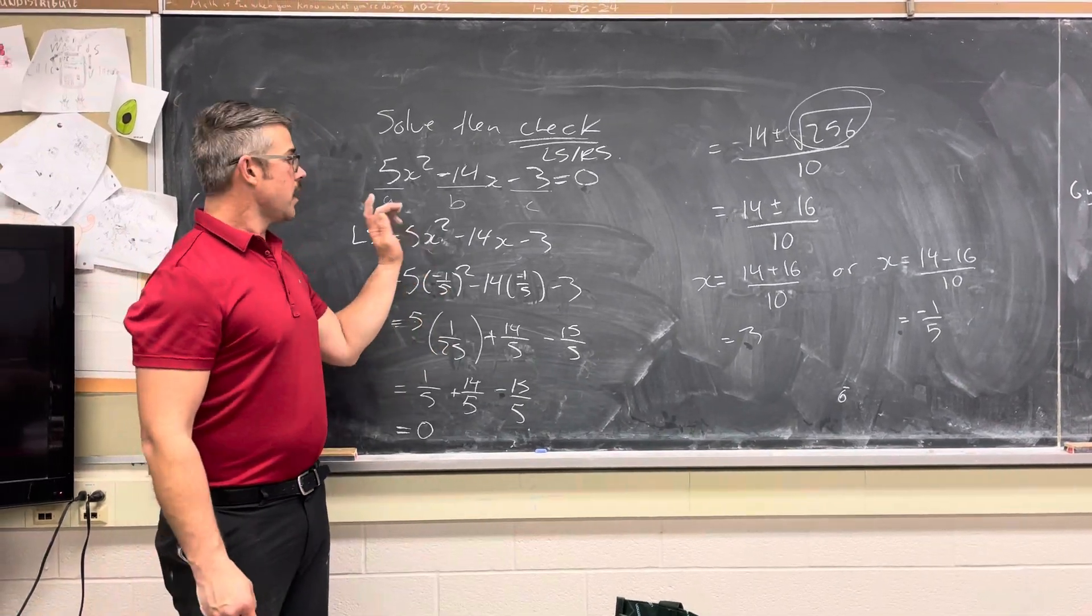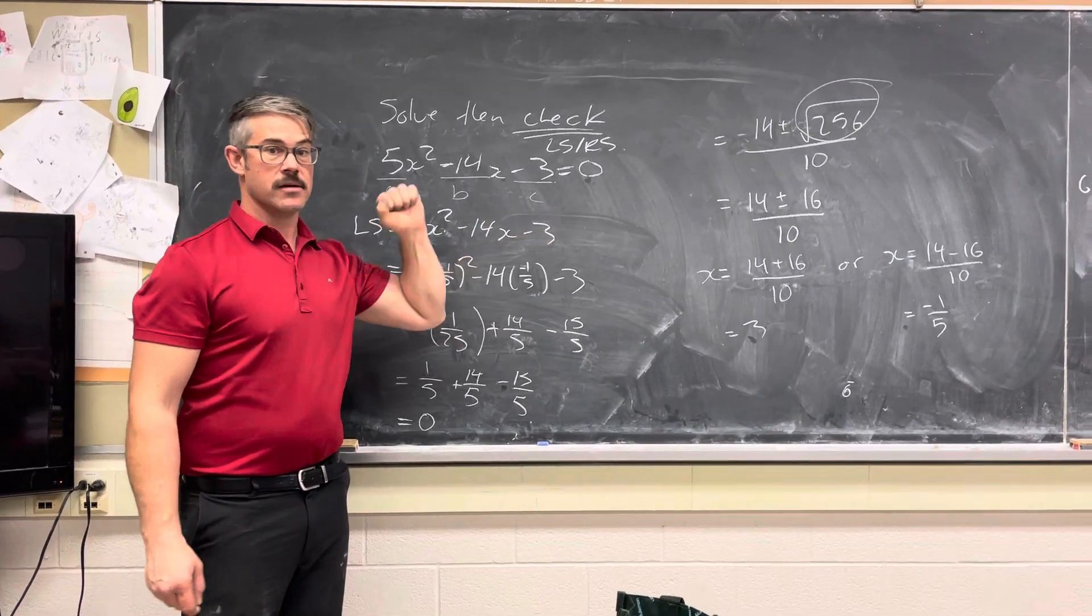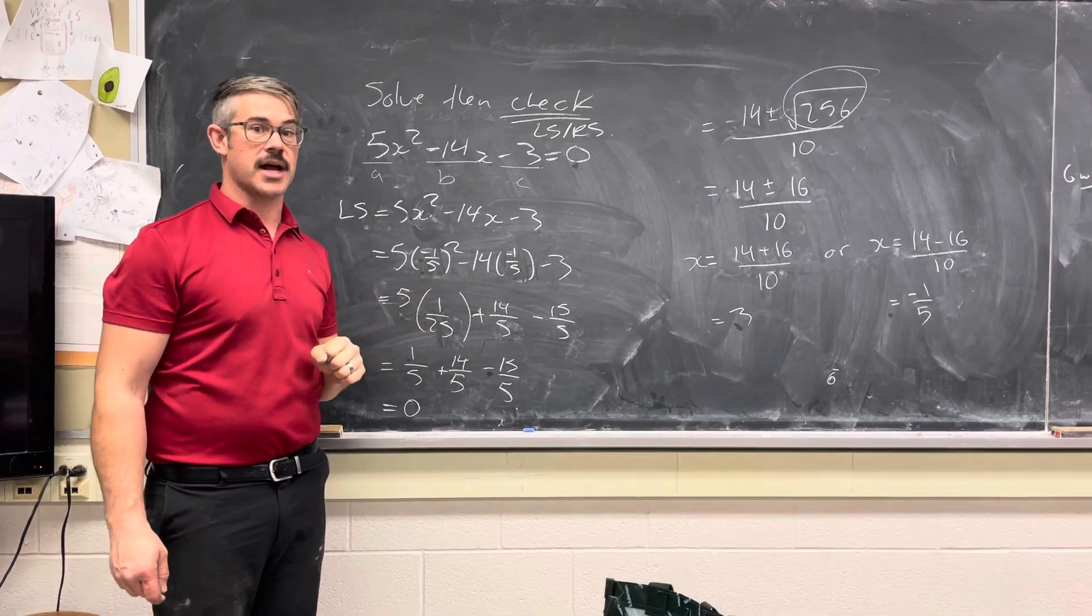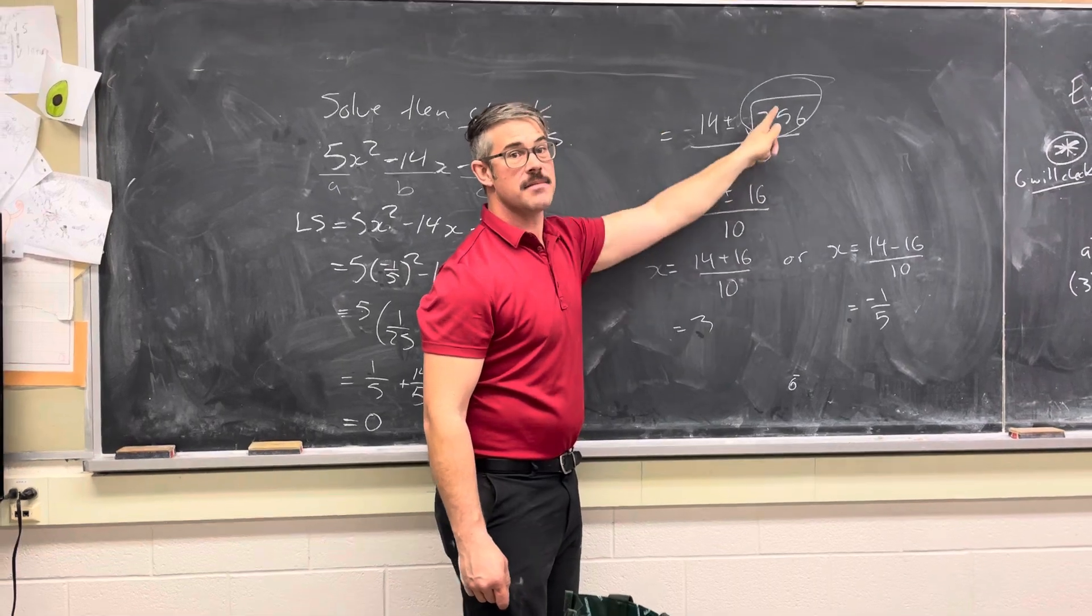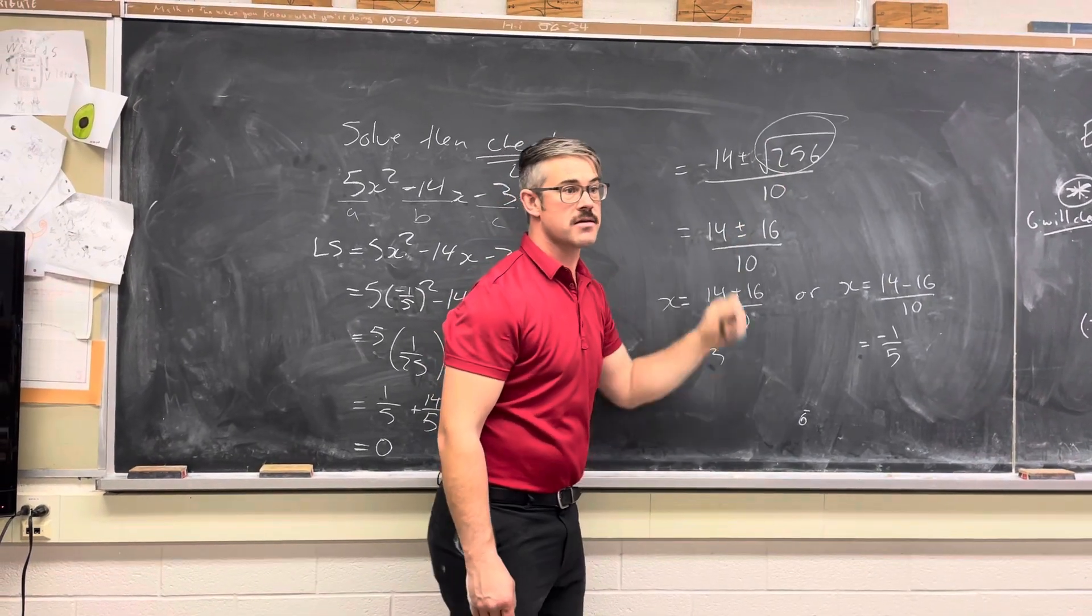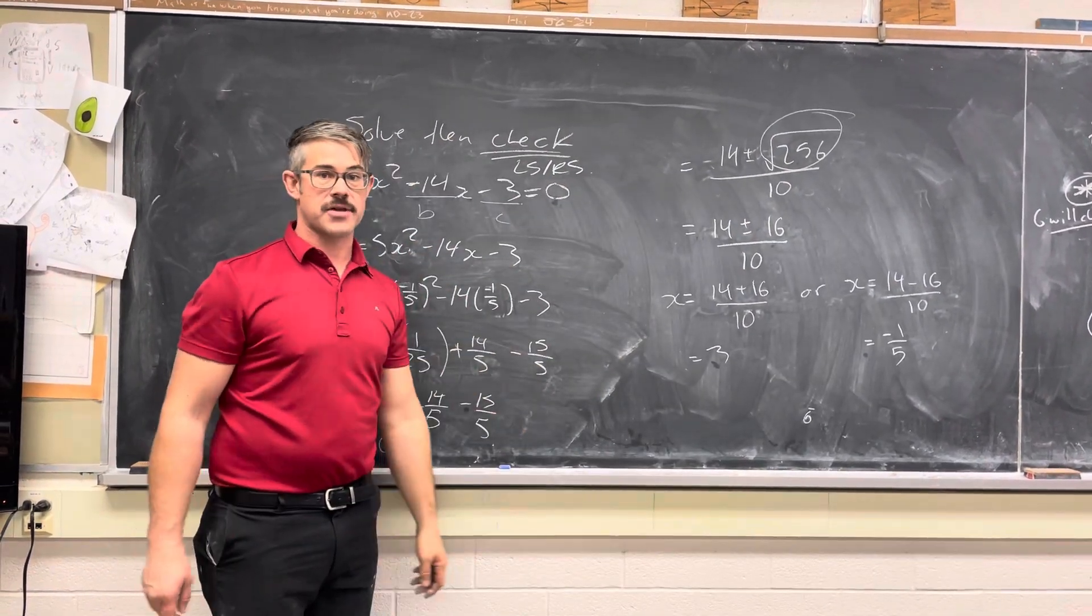So, key items. We learned how to identify a, b, and c. We checked out how to use the quadratic formula to solve. We found out that when we have a nice square root, it likely means it would have factored in the first place, and we now know how to check with the left side, right side check.